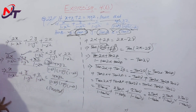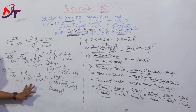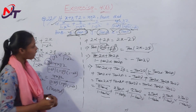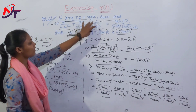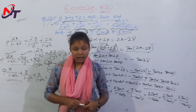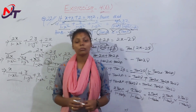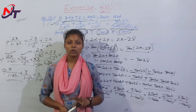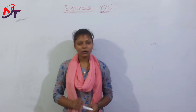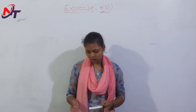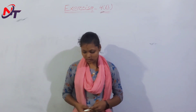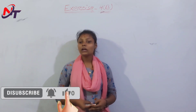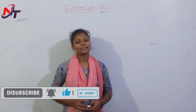So we have proved that x/(1 − x²) + y/(1 − y²) + z/(1 − z²) = 4xyz/[(1 − x²)(1 − y²)(1 − z²)]. Question number 22 is complete. Try similar questions on your own; if you cannot solve them, comment in the comment box. The next class will continue with the next chapter. Please like this video and subscribe to our channel.